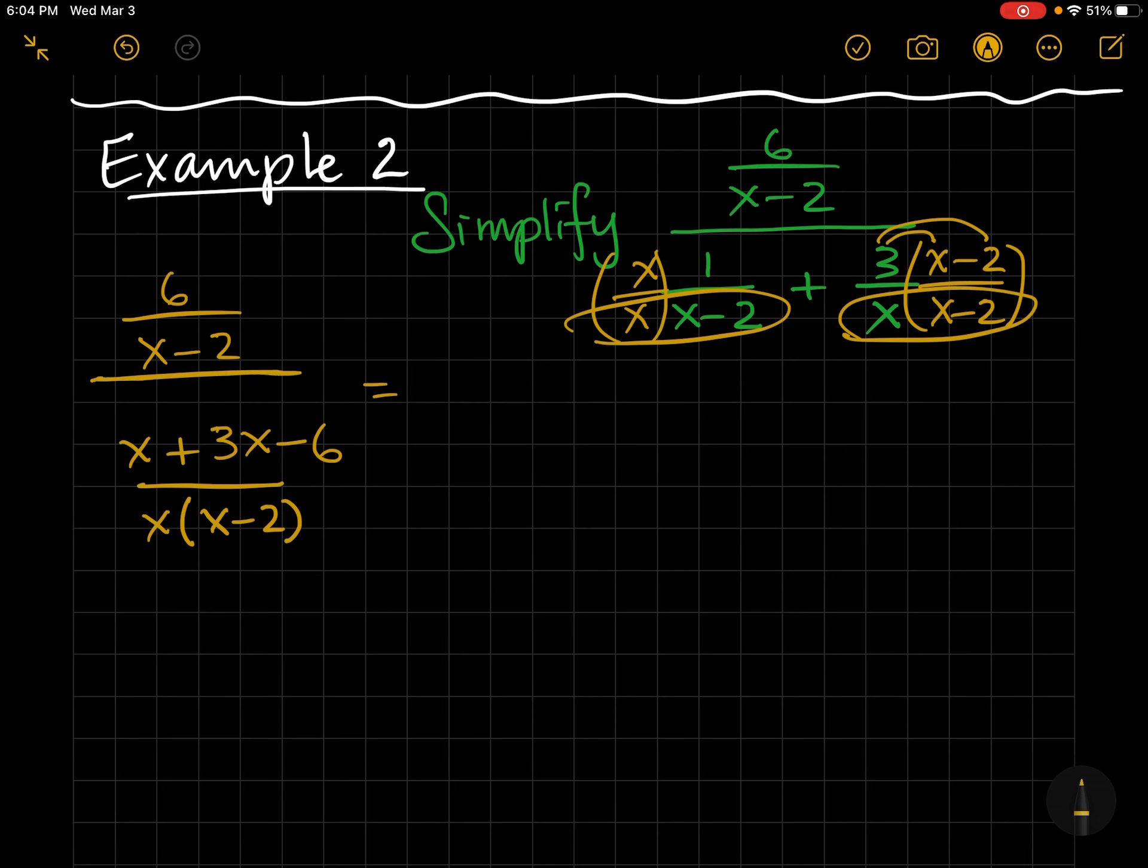So, I'm going to go ahead, rewrite this with the division symbol. Also, I'm going to combine the like terms here. So, that's 4x minus 6, x times x minus 2 on the bottom.